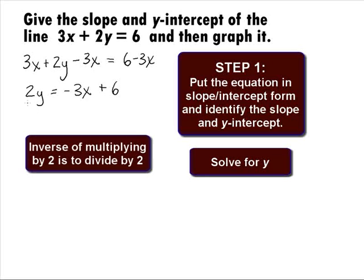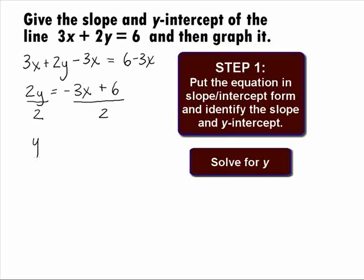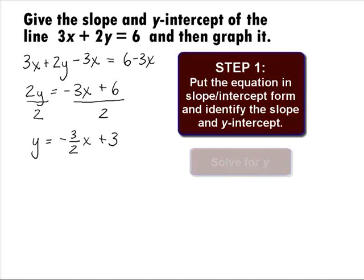The inverse of multiply by 2 is to divide both sides by 2. This gives us 2y over 2 equals negative 3x plus 6 all over 2. Making sure that we divide both the negative 3x and the 6 by 2, we now have it solved for y with y equals negative 3 halves x plus 3.